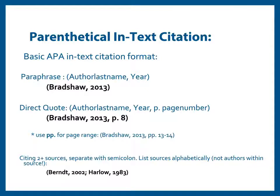We will talk about narrative citations a little later, which is another good way of including citation information in our papers. You will often find authors have stated similar things and want to show that your statements are well supported. You can cite more than a single source in one in-text citation. To do so, separate them with a semicolon and list the sources alphabetically within the citation.